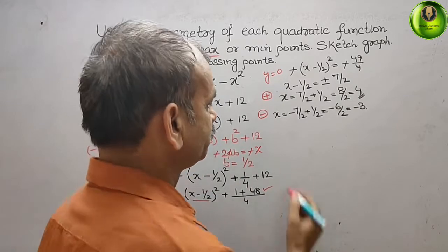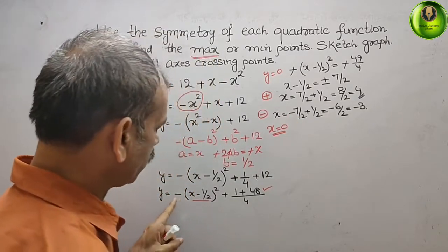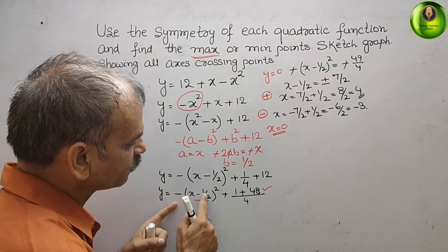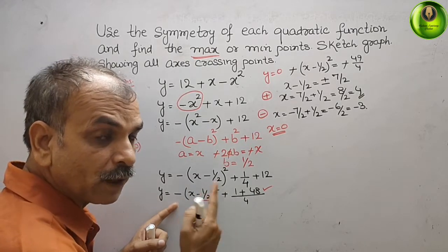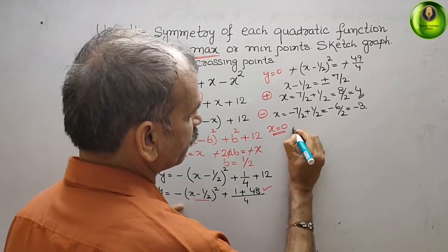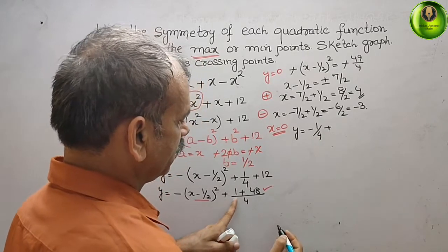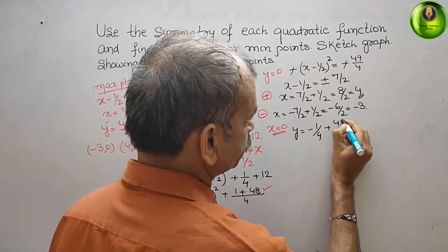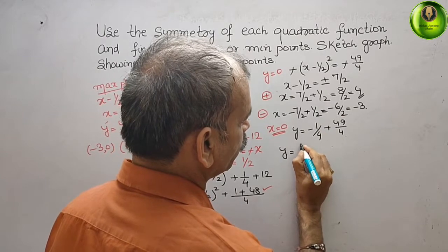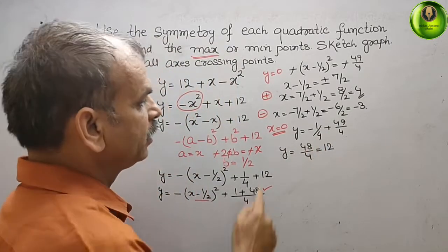Now we set x equal to zero to find the y-intercept. Substituting x equals zero: minus of 0 minus 1 by 2 whole square equals minus 1 by 4, so y equals minus 1 by 4 plus 49 by 4. Solving: 48 by 4 equals 12. So the y-intercept coordinate is 0 comma 12.